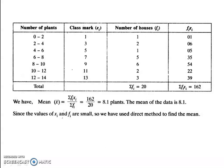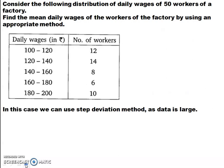Next, let's go to the second question. Consider the following distribution of daily wages of 50 workers of a factory. Find the mean daily wages of the workers of the factory by using an appropriate method. I told you students, if you want to choose an appropriate method, first step is to find the table. Here see, this is 3 digit number and this is 2 digit numbers. Isn't it? So, you will not go for direct mean method.